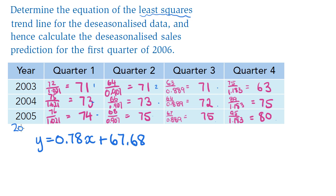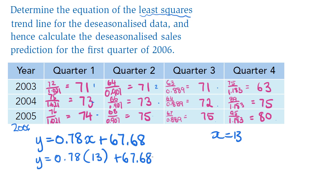The first quarter of 2006 is the next one along, so x equals 13. Substituting: y equals 0.78 times 13 plus 67.68, which gives 77.82. Rounded to the nearest whole number that's 78. Since the original figures were in thousands of dollars, the de-seasonalized sales prediction for the first quarter of 2006 is $78,000.